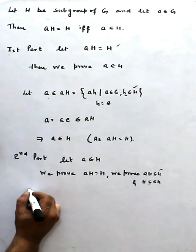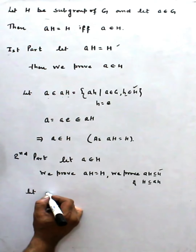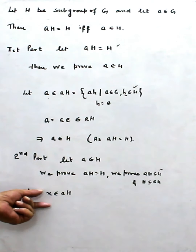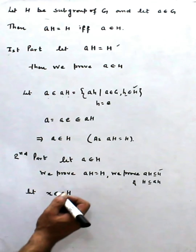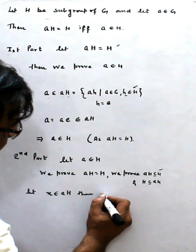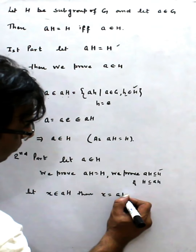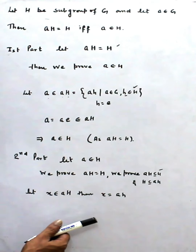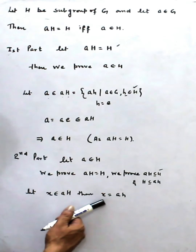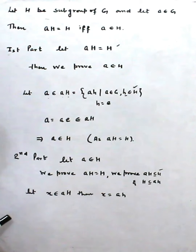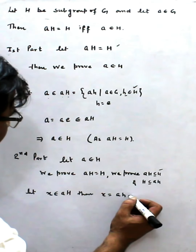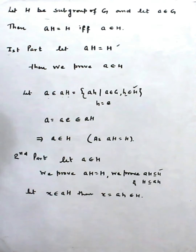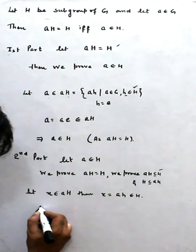So first this part — we show: let X belong to AH. Then X is equal to some element of the form AH, right? And this belongs to AH, this belongs to H.